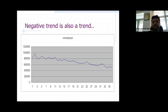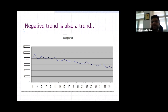Always keep in mind that a negative trend is also a trend. Sometimes we assume trend only means a positive direction, but we should not ignore the negative trend. With this, I have completed the theoretical part of this time series analysis. In our next session we will discuss hands-on SPSS, by which you can make forecasting using SPSS. Thank you.